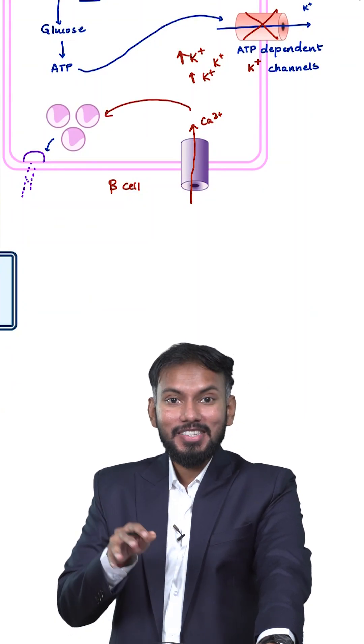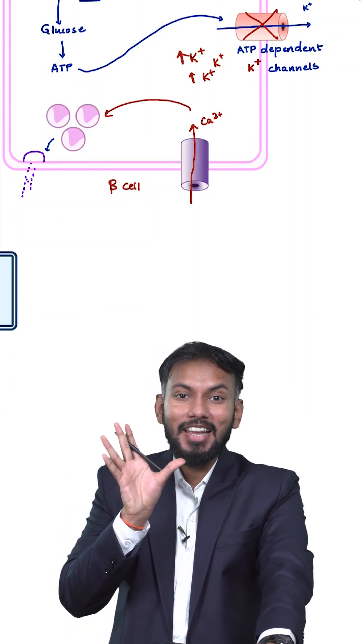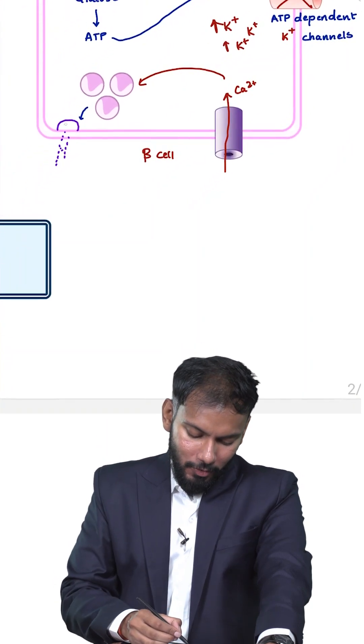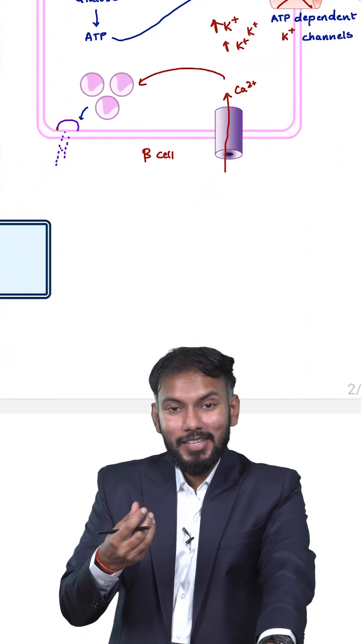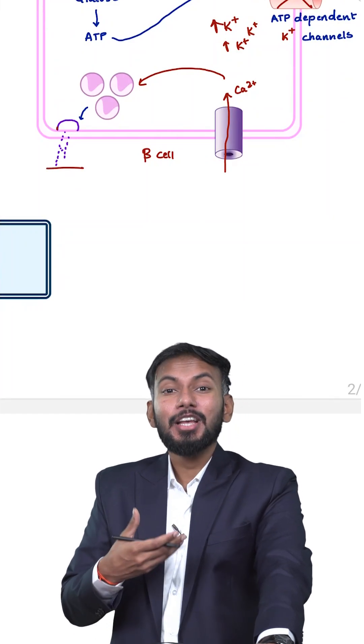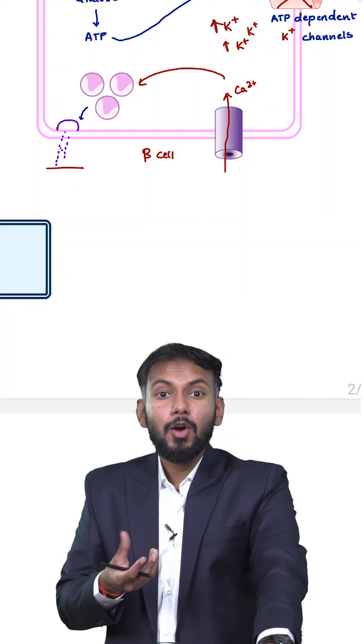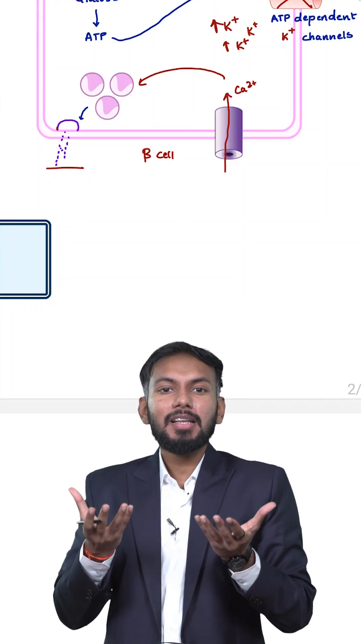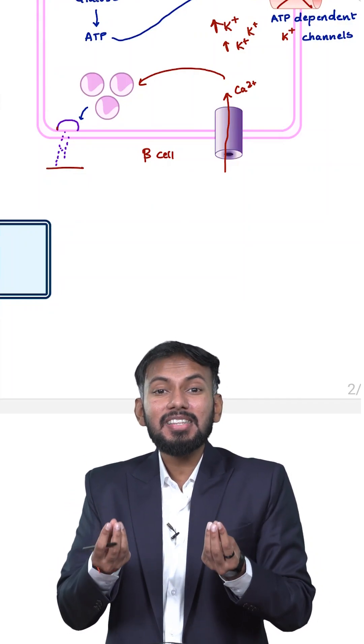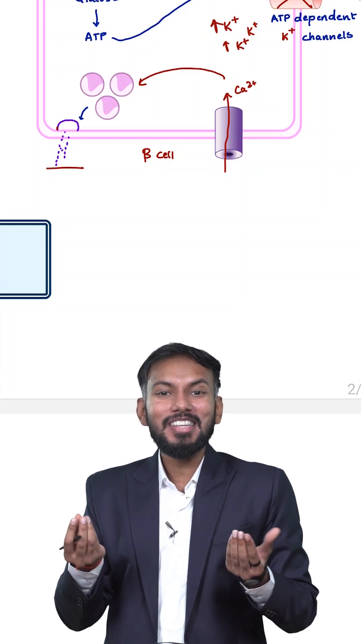This will cause contraction of vesicles and movement of vesicles, and the vesicles will fuse with the membranes. This is known as exocytosis and it will release the stored molecules inside. What is stored in the vesicles of beta cells? Beta cells release insulin. This is how insulin is released.